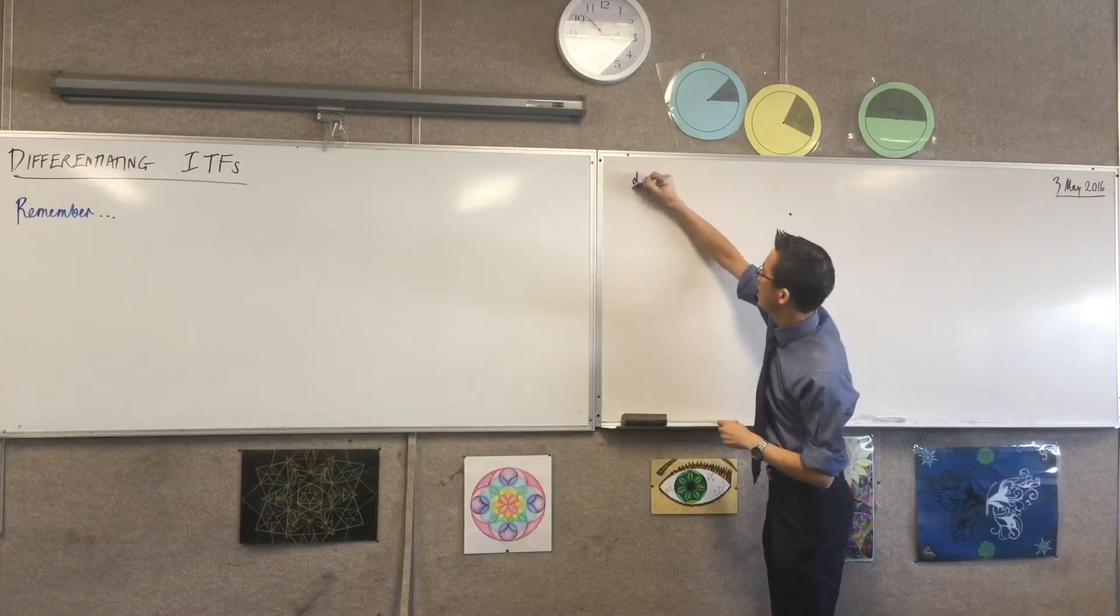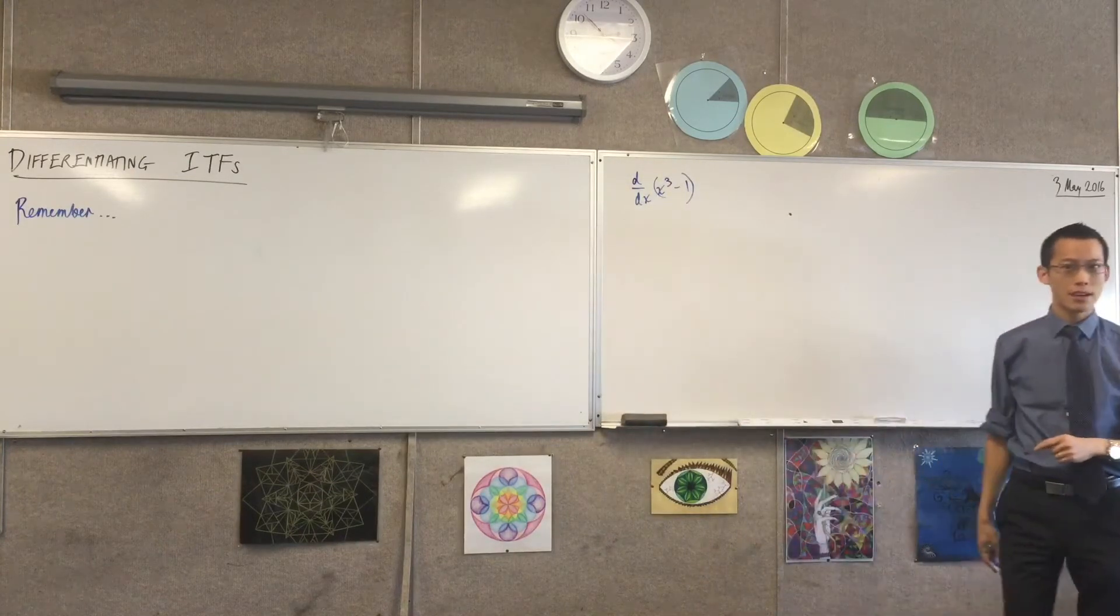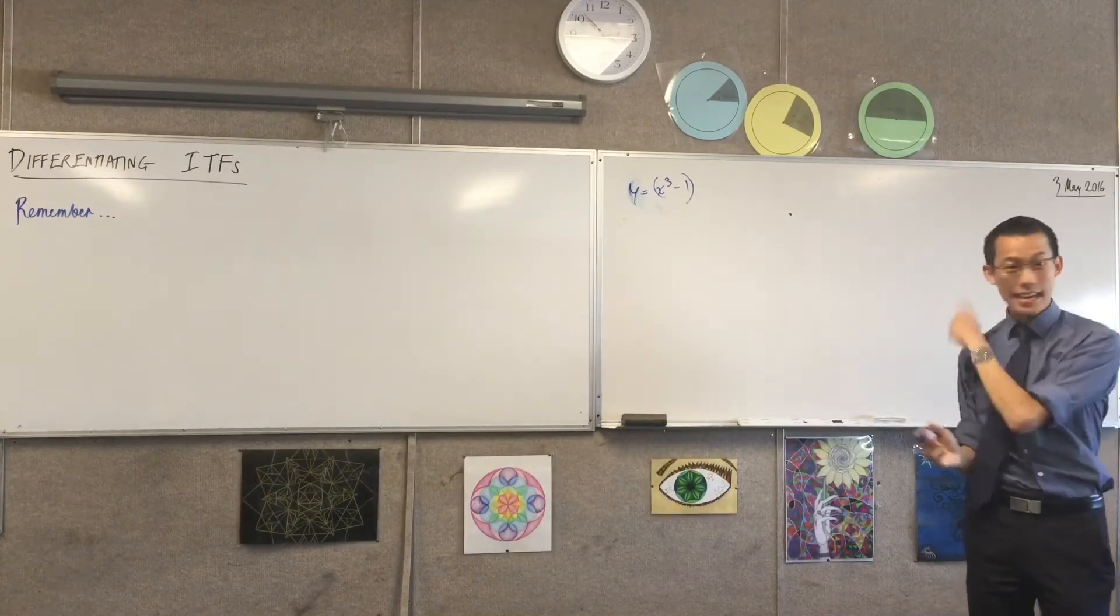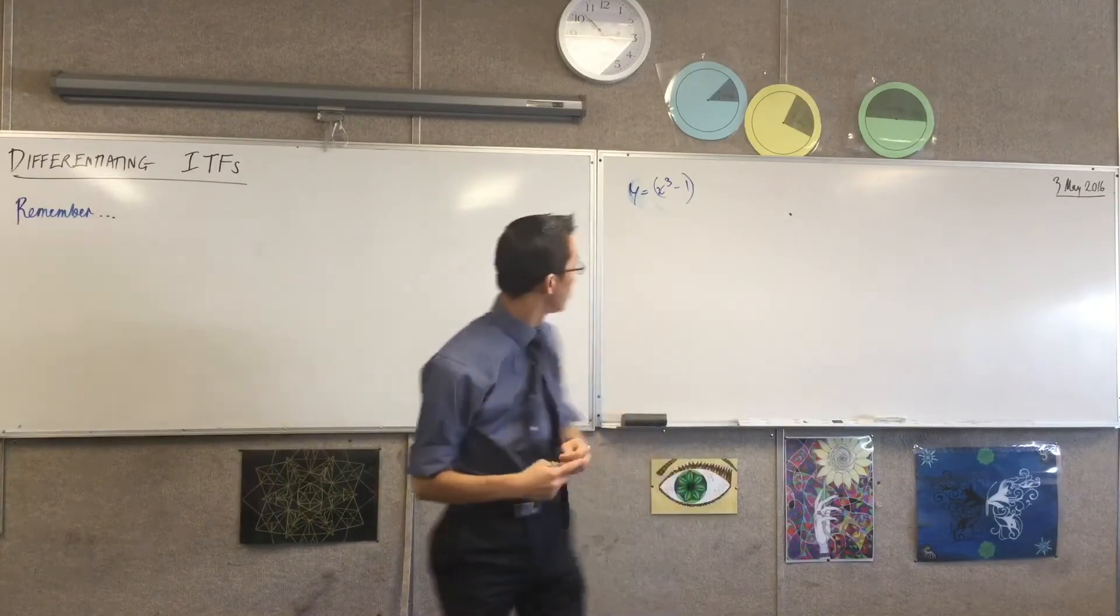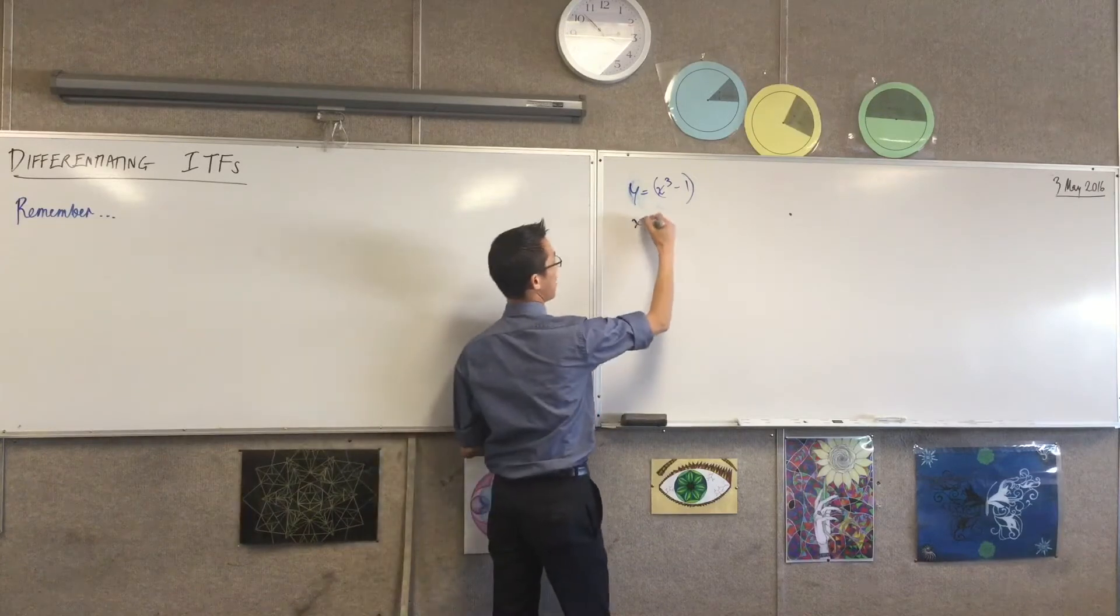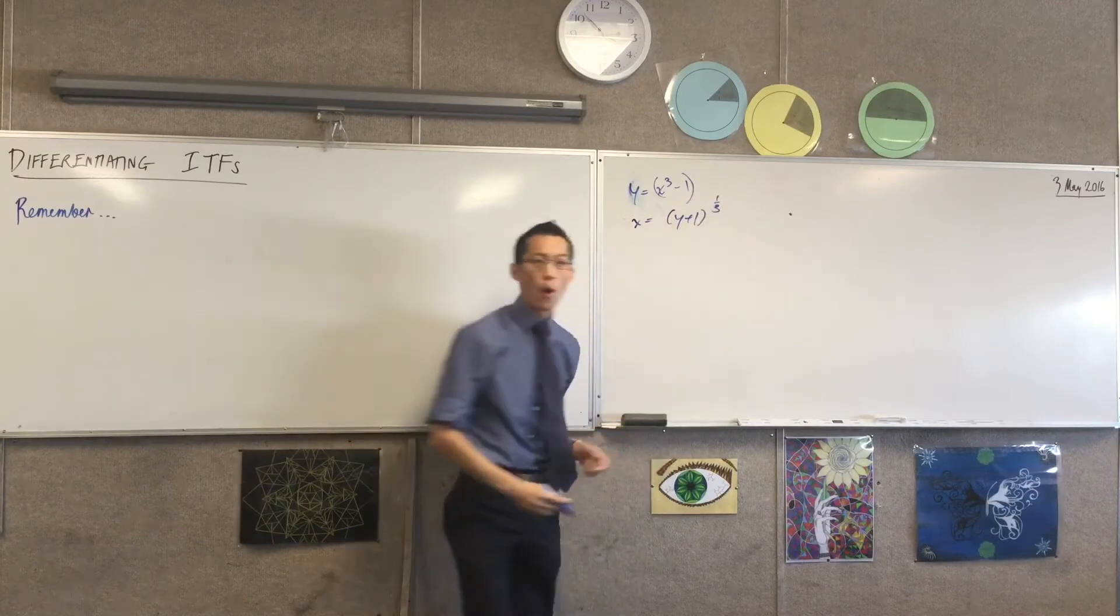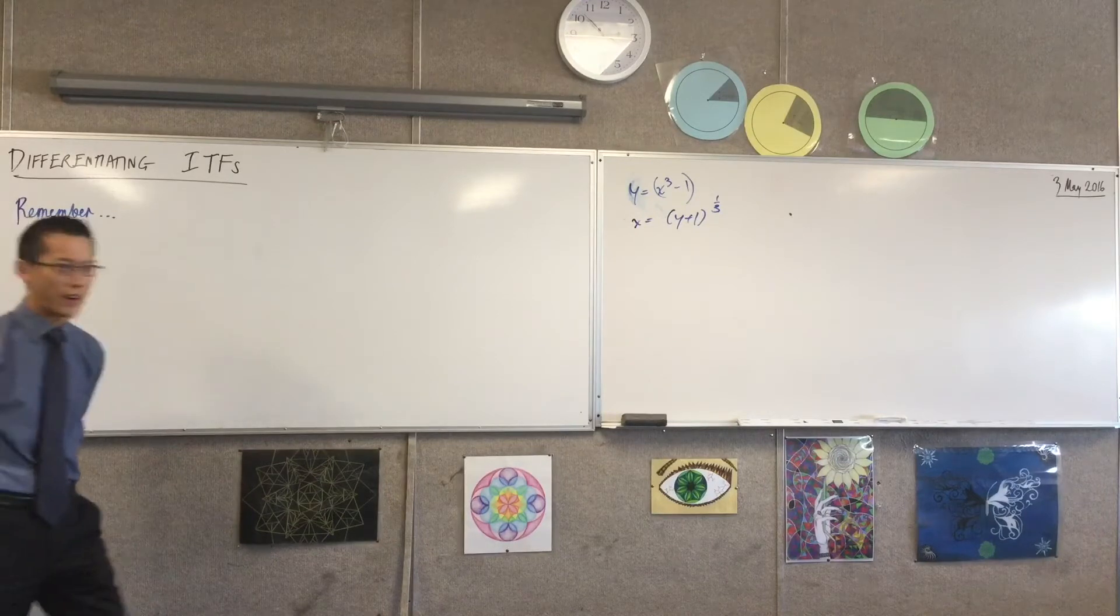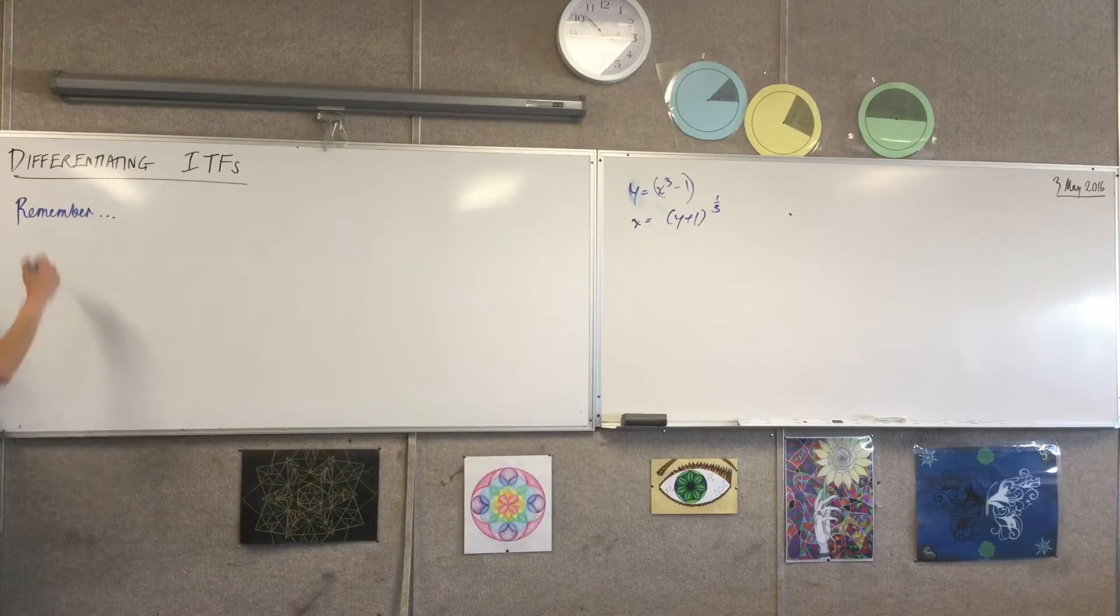I think it was with this, right? X cubed minus 1, or something like this. If we called this one Y, we noticed if you rephrased it, if you made X the subject and then differentiated it again, you wouldn't differentiate with respect to X if you rearranged. What would you differentiate with respect to? You differentiate with respect to Y. Y is the independent variable now. So you differentiate with respect to that instead of X. What was the relationship that we got? Yeah, dy/dx times dx/dy equals 1. Very good.